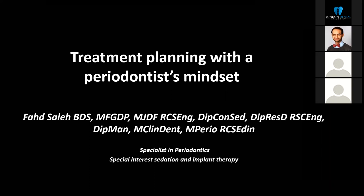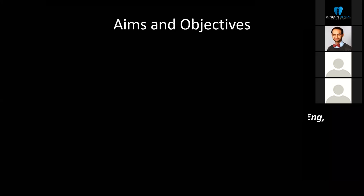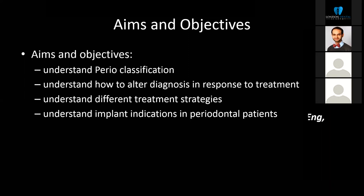The aims and objectives are: understanding the periodontal classification — not just applying it but understanding how to utilize it — and understanding how to alter a diagnosis in response to treatment, understand the different treatment strategies that could be formulated based on the diagnosis, and understand when to utilize dental implants in patients with periodontal disease or a history of attachment loss.